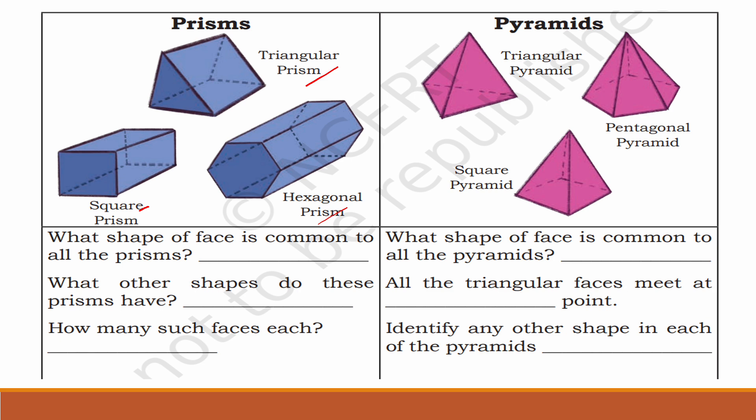A triangular prism has two identical bases — this is one base and this is another base. Their shape is triangular, so it is called a triangular prism. The shape of the base determines the type of prism: if the base is triangular in shape, then it is called a triangular prism. Also, there are flat sides that connect the bases.